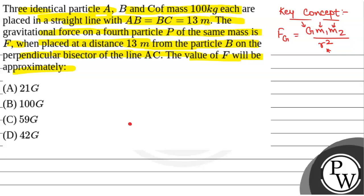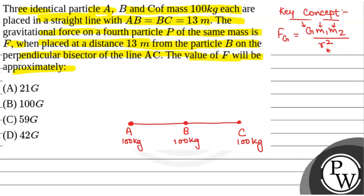We will first understand the diagram. Suppose this is particle A, this is particle B, and another particle C. The mass of each particle is 100 kg. The three particles are in a straight line such that AB is 13 meters and BC is 13 meters.